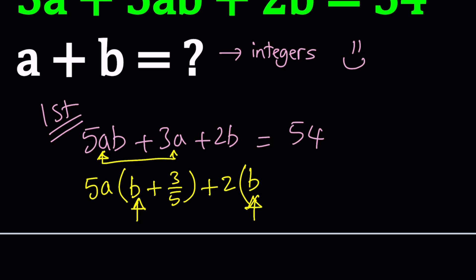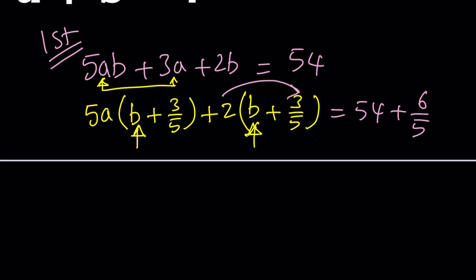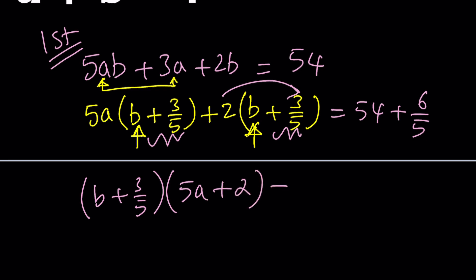Once we get that, we should follow up with a 3/5. But when you distribute, this is equivalent to adding 6/5. So I should be adding 6/5 to both sides. So far so good. I hope it does make sense because we're about to factor by grouping. So now b + 3/5 is a common factor. So we can take it out and we end up with 5a + 2 and this is equal to 276 divided by 5.